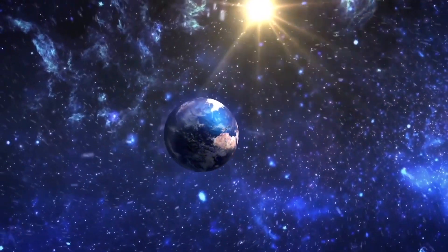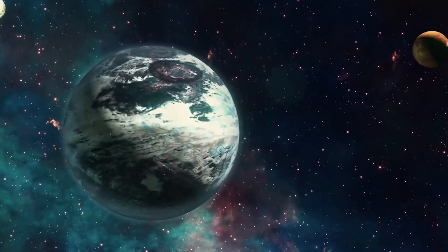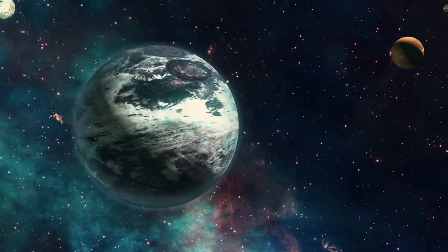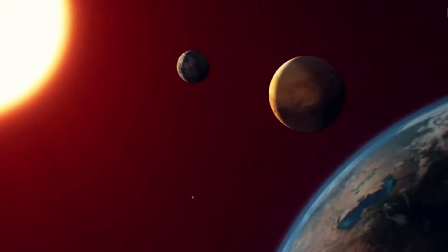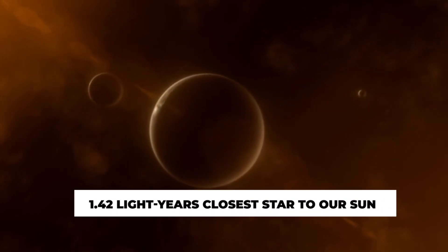Some of these planets were found in the habitable zones of their stars, with favorable temperatures that allow for the presence of liquid water on the surface. However, what truly caught the attention of scientists about Proxima b was the position of its solar orbit about 1.42 light years from the closest star to our sun.